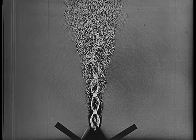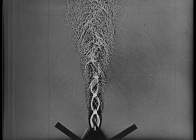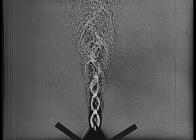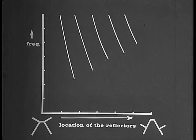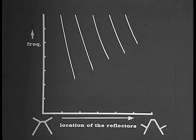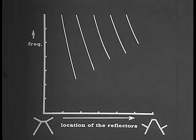When we move the reflectors, the oscillation frequency changes as shown in this graph. On the vertical axis, the frequency F is plotted, and on the horizontal axis, the displacement D of the reflectors.